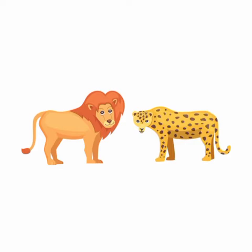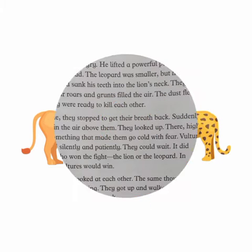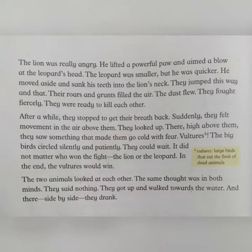Continuing the remaining reading of Unit 6, 'The Lion and the Leopard,' on page 64. Let's start. As we all know from previously, the lion and the leopard were both arguing about who is going to drink the water first.